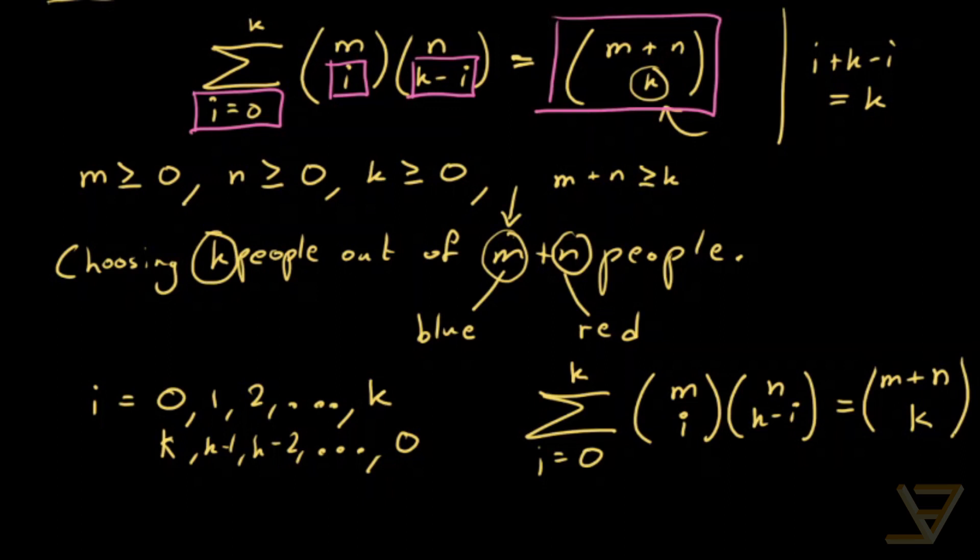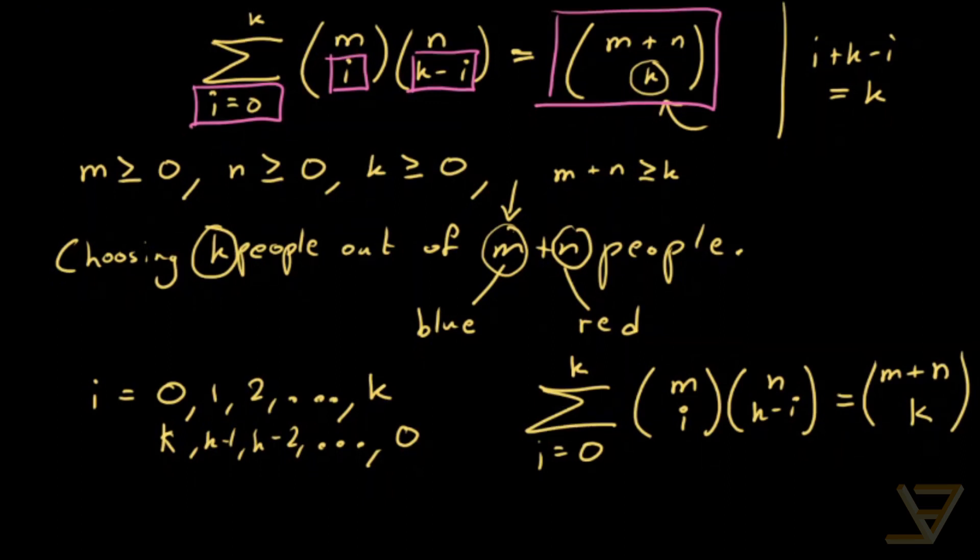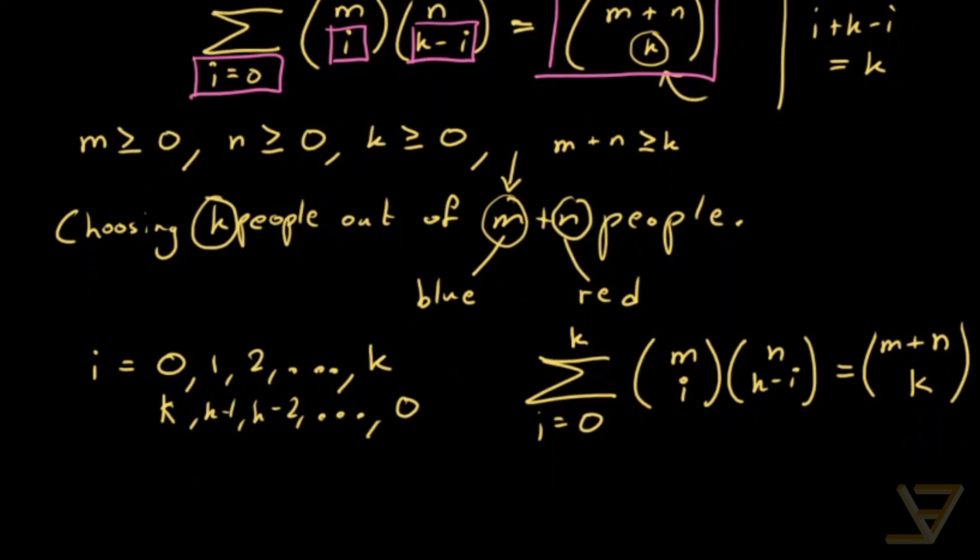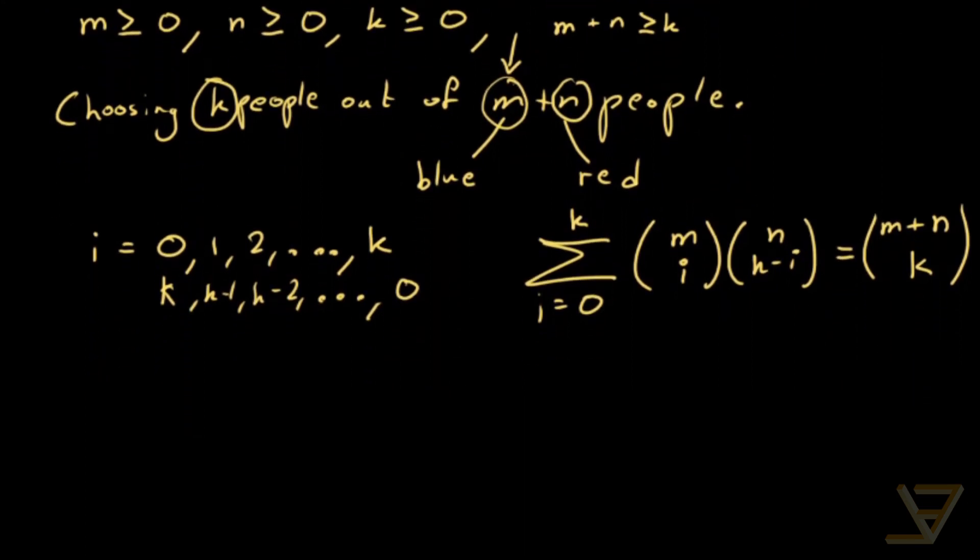Now the last thing that I want to mention is the caveat. So notice that usually when we have a binomial coefficient, let's say p choose q, we need p is greater than or equal to q because if you're choosing q things out of p things then you better be choosing fewer than how many total things you have.